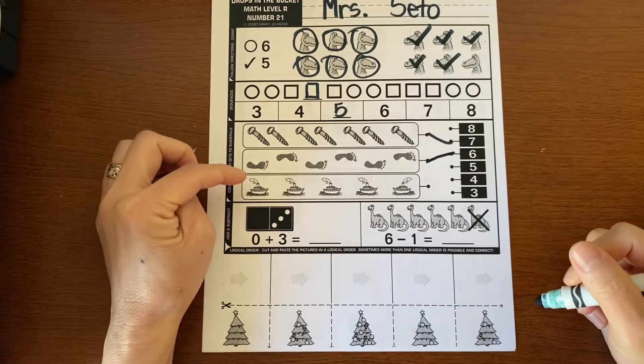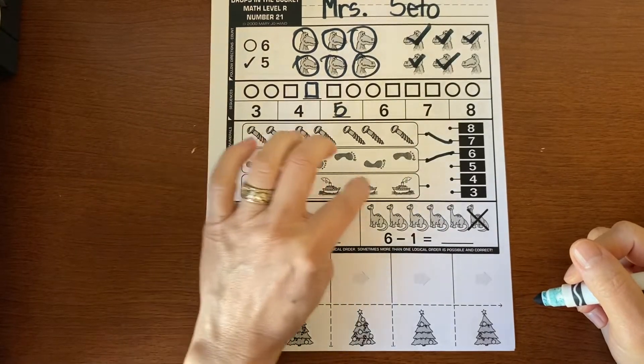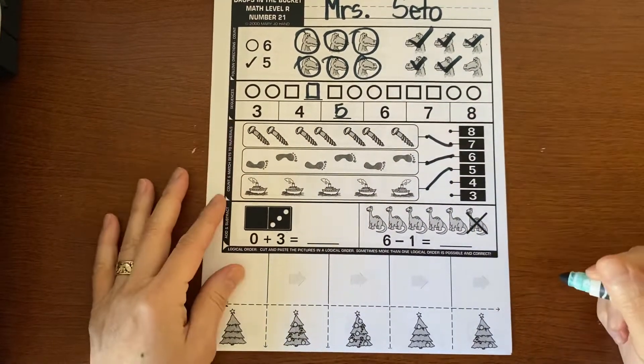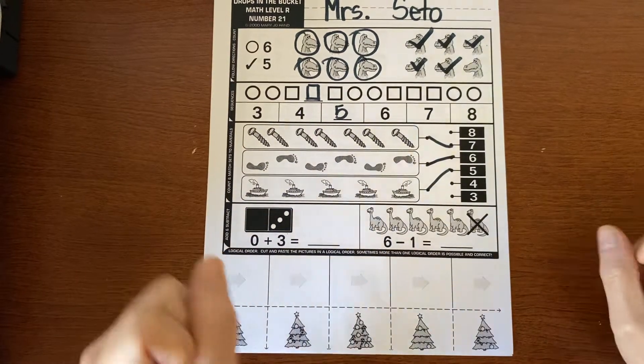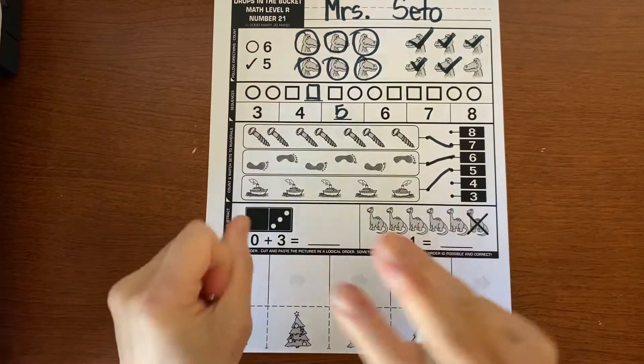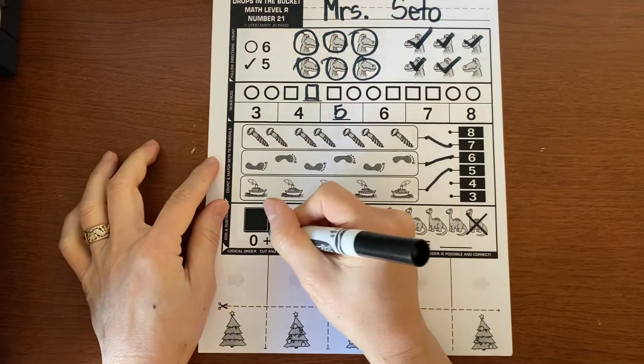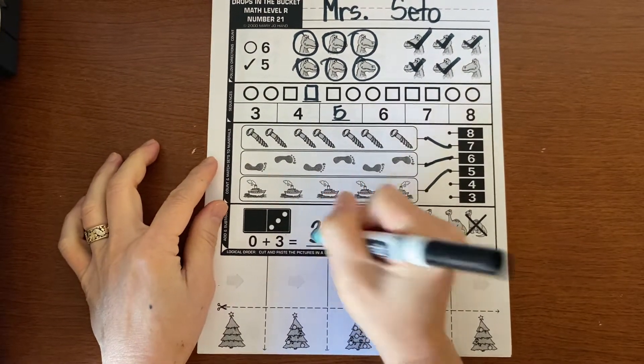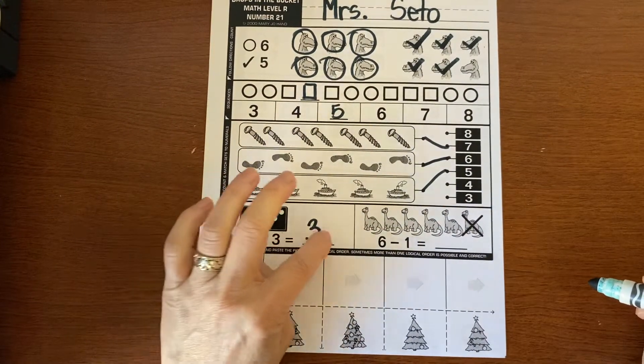And let's look at the ships. One, two, three, four, five. Five. For our addition, it has zero and then three more, or I can count the dots. One, two, three. Three. Zero plus three equals three.